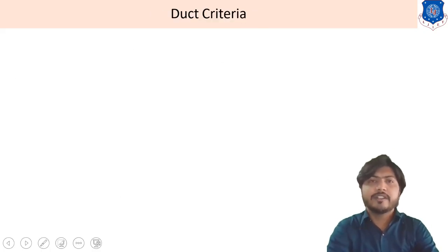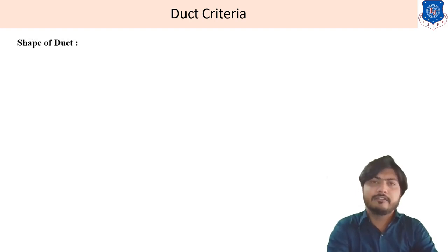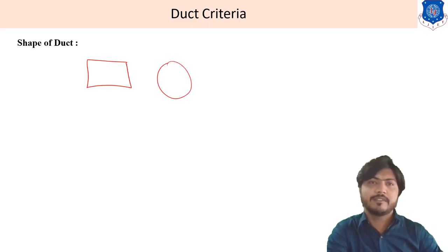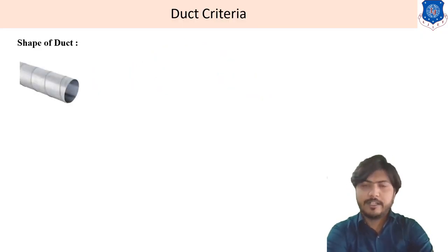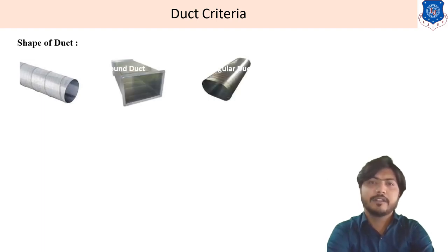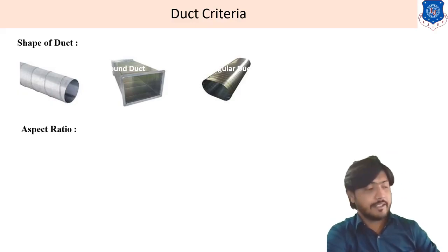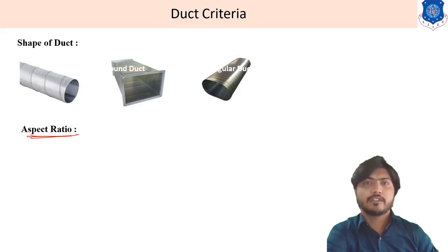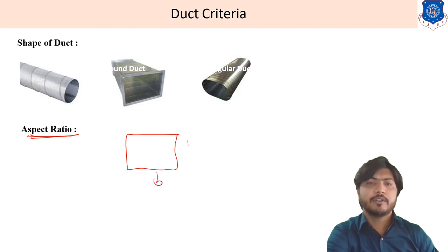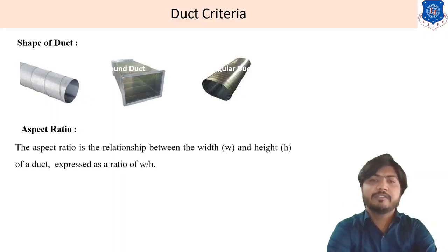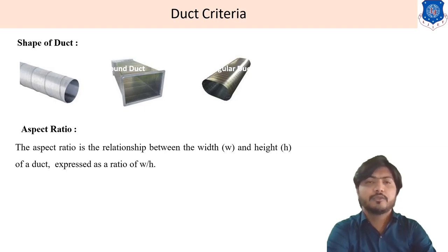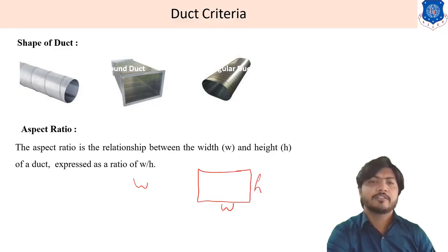Duct design criteria: the first criterion is the shape of the duct — it may be rectangular, circular, or elliptical. The second criterion is the aspect ratio, which is the ratio of width to depth, expressed as W/D or W/H. For a rectangular cross-section of width W and height H, the aspect ratio is W/H.